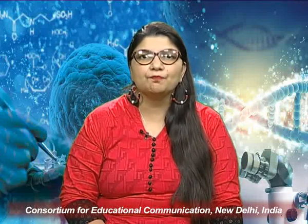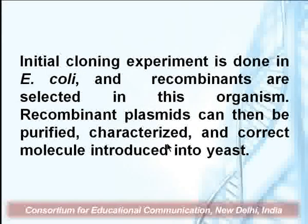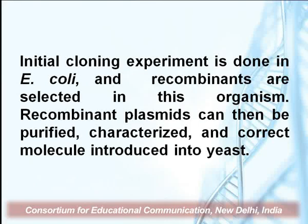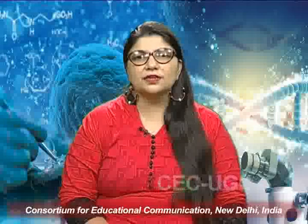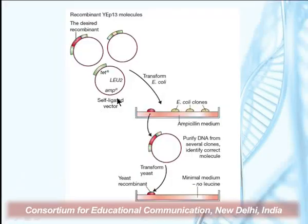Shuttle vectors become very important when such manipulations need to be done. The initial cloning experiment is done in E. coli and recombinants are selected there. The recombinant plasmids can then be purified, characterized, and the correct molecules introduced into yeast. This gives an easy mechanism for genetic manipulation while still allowing required expression in the final organism such as yeast.